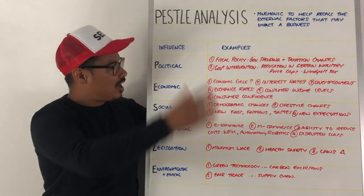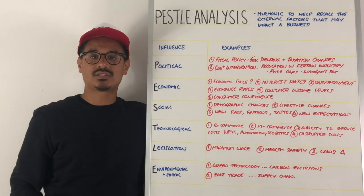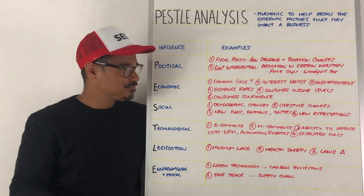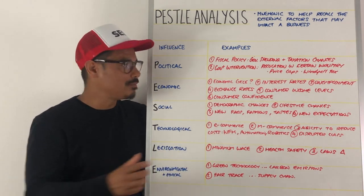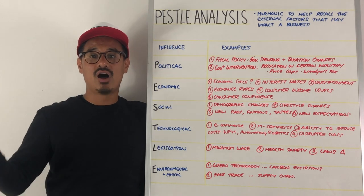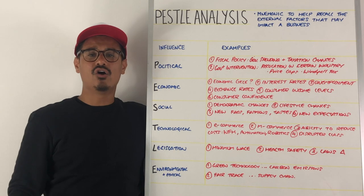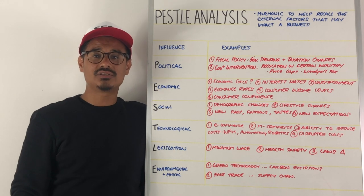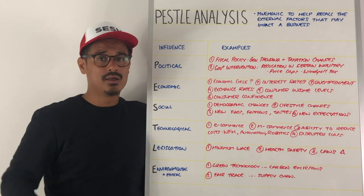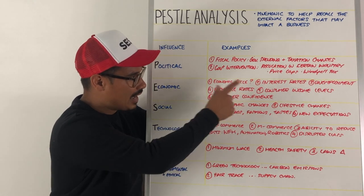Economic influences are part of the PESTEL analysis. Where are you on the economic cycle? Are you in a boom or a bust, a recession or a period of growth? Interest rates are also key — where are your interest rates right now? In the UK there has been a long trend of interest rates going to the absolute floor, sitting at central bank rates of 0.1, with the possibility of moving to zero or using quantitative easing.